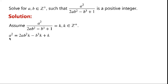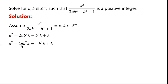we can write a squared equals 2ab squared k minus b cubed plus k. Now, we move 2ab squared k to the left-hand side of the equation, giving a squared minus 2a times b squared k. If we add b to the power of 4k squared to the left-hand side, we can complete the square.